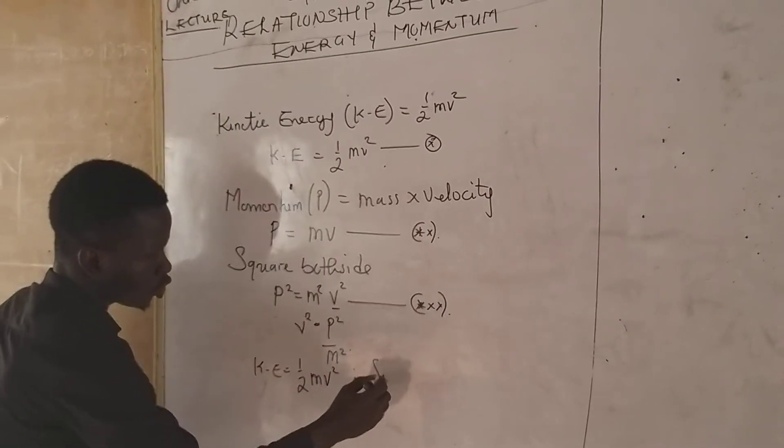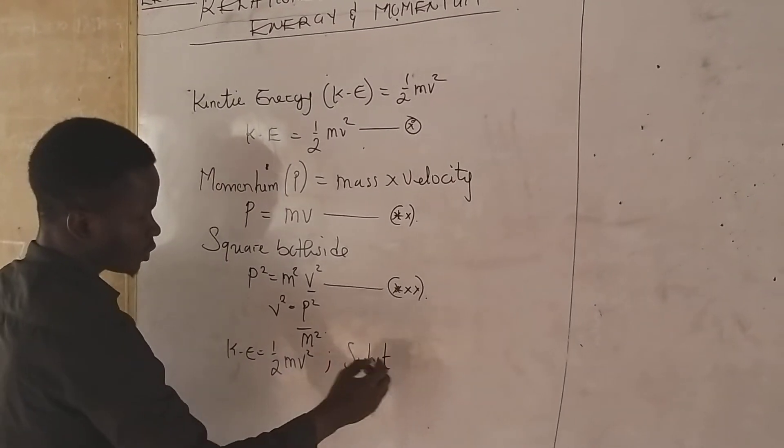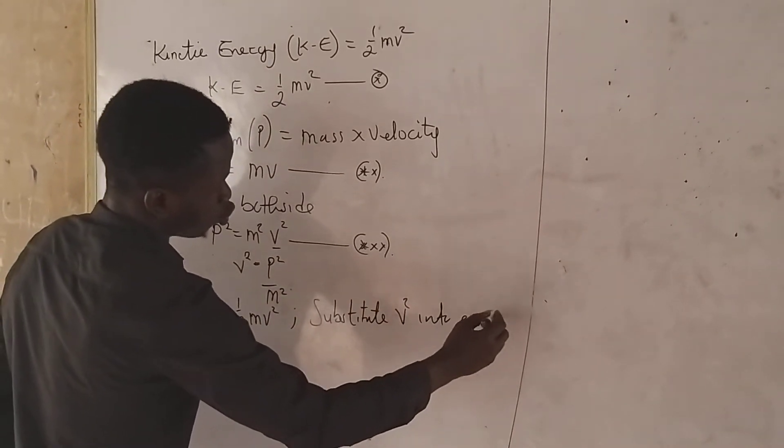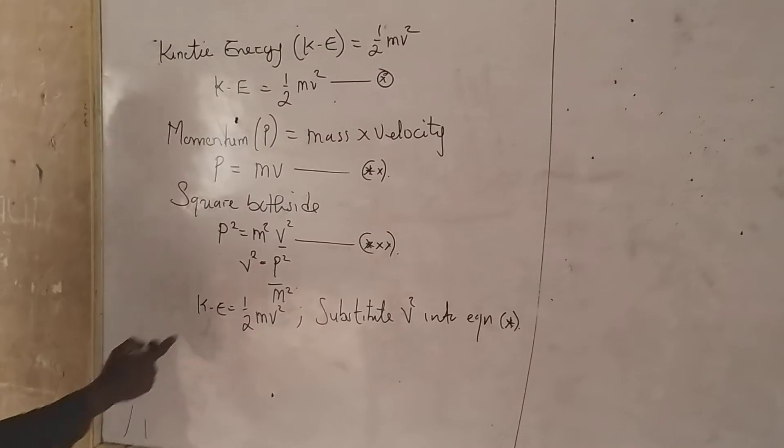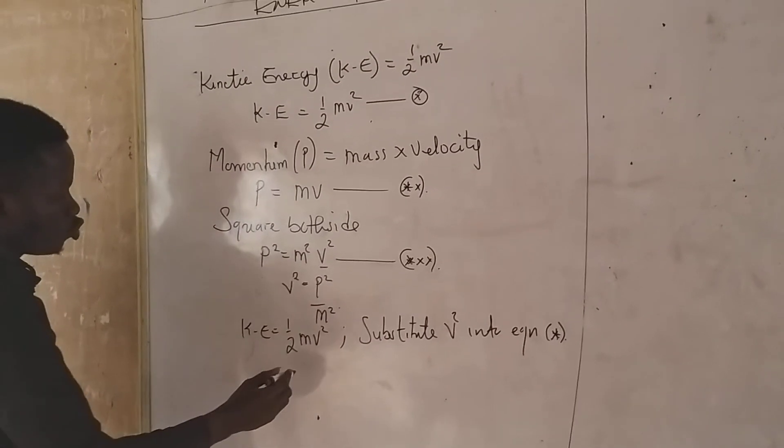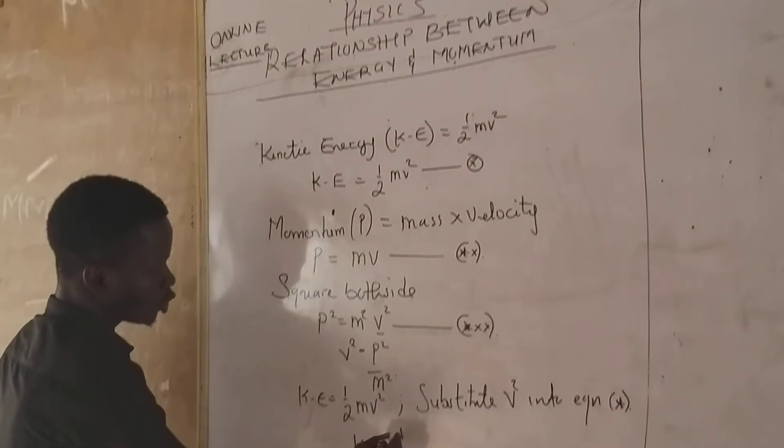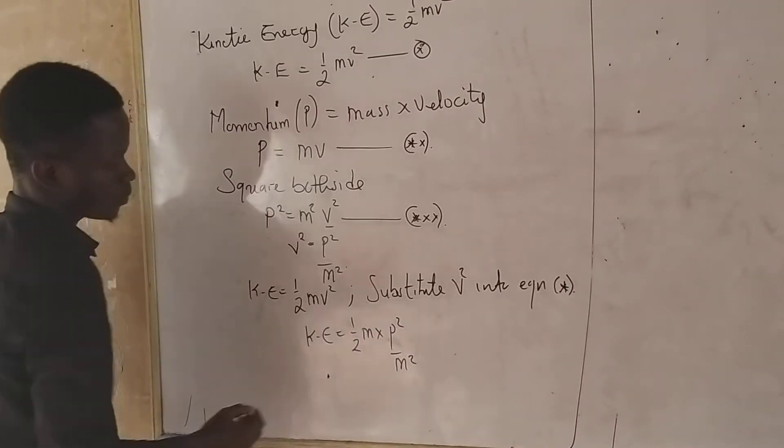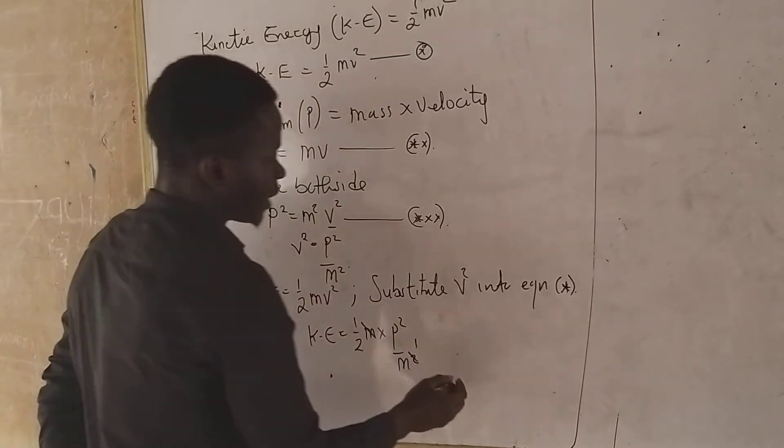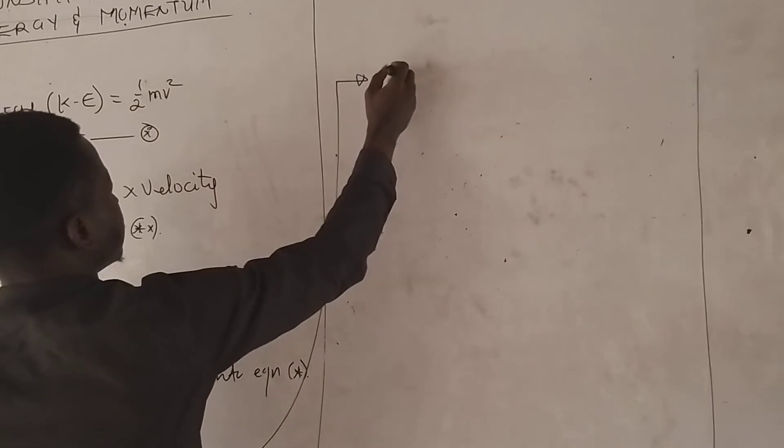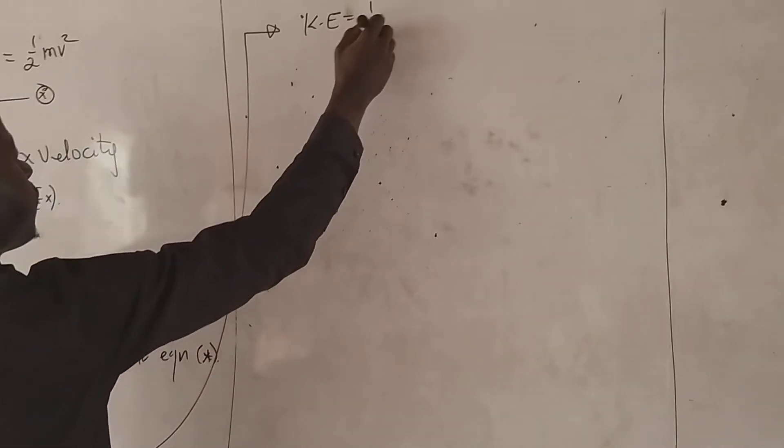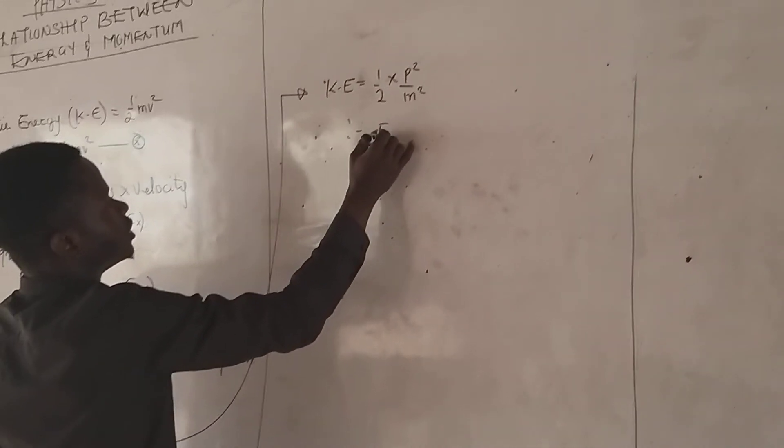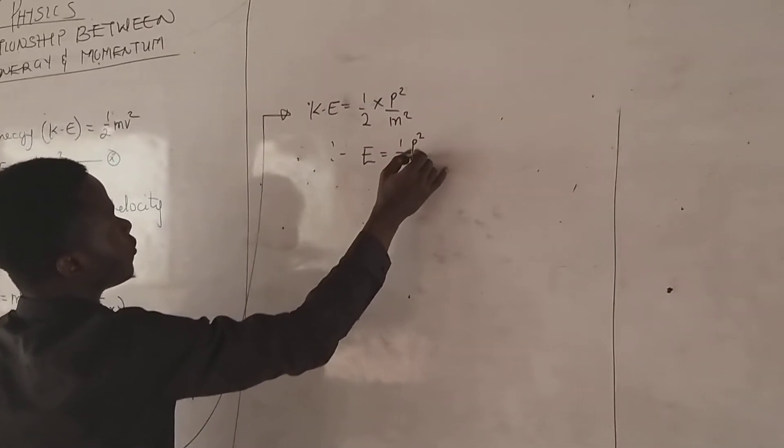So we substitute V squared into equation 1. We will be having KE to be equal to 1 all over 2, M times P squared all over M squared. M cancels out M. Kinetic energy KE will be equal to half, half P squared all over M squared. That is, E is 1 all over 2, P squared over M squared.